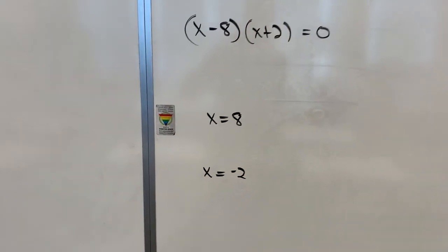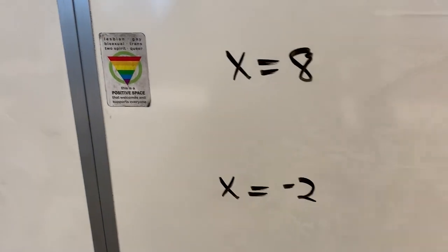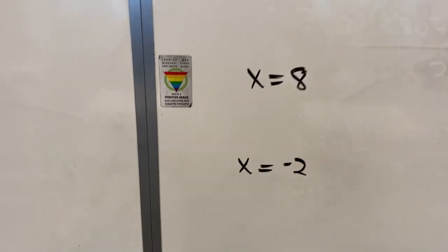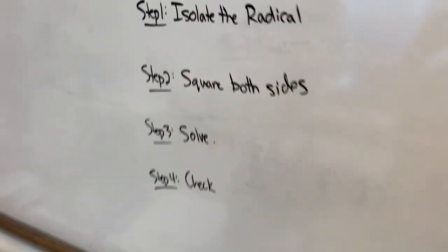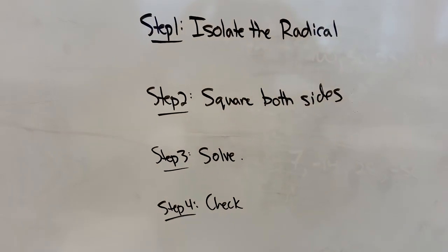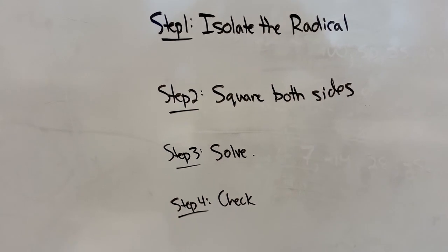We have two good answers. x equals negative 2 and x equals positive 8 that both satisfy the original equation. But, in general, you want to isolate the radical, square both sides, solve what's left over, and check.